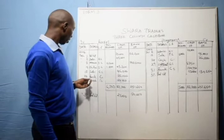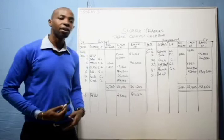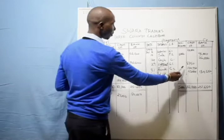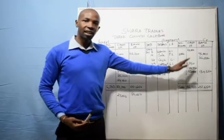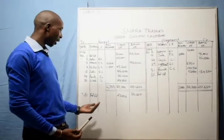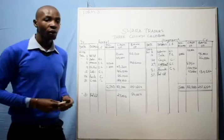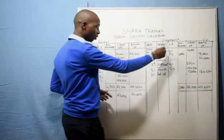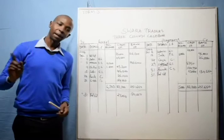On 24th, we have a contra-entry where we withdrew 26,000 from the bank for office use. We take it out of the bank on the credit side and input it into cash on the debit side, because the debit side is receipts and the credit side is payments. The bank will show a payment of 26,000 and cash will receive that 26,000. On 29th, we paid for lighting and heating 8,750 in cash — a payment entry.